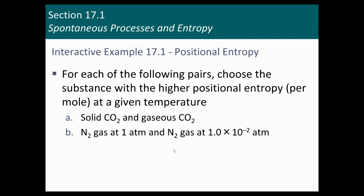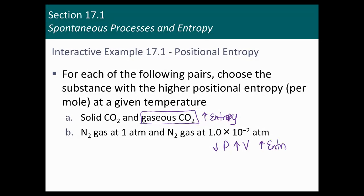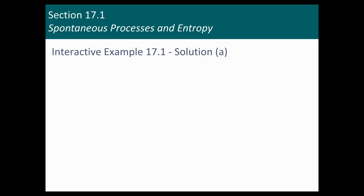Here's a way of testing ourselves. We want to compare higher positional entropy per mole at a given temperature. Solid CO₂ versus gaseous CO₂ — for sure the gas phase would have higher entropy. And if I have two gases, one at one atmosphere and the other at a much lower pressure — the lower the pressure, the higher the volume of the gas, and the bigger the volume, the more possible arrangements that gas is going to have.